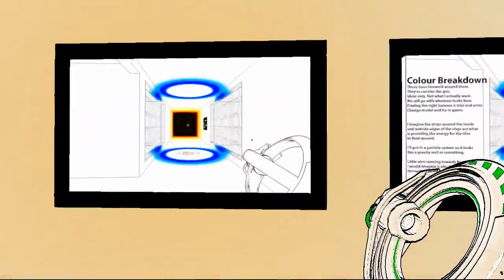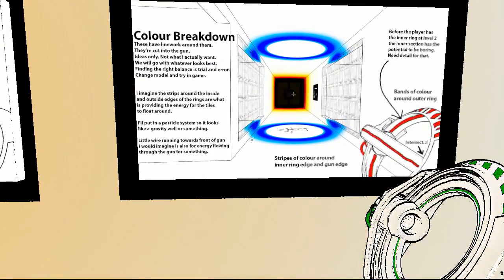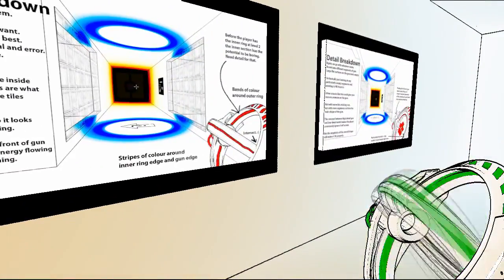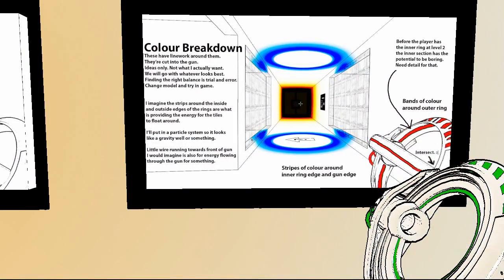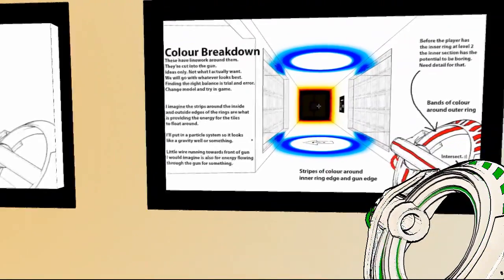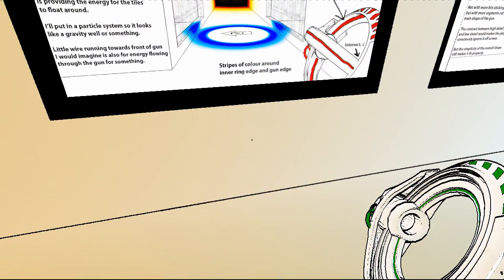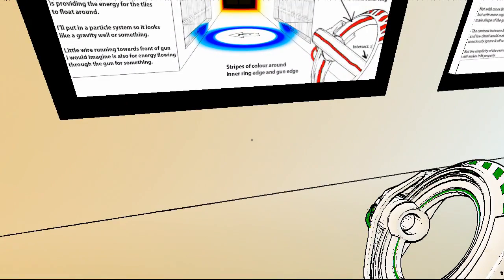But it's actually really cool how they... Oh, color breakdown! Let's see what it says. Ha! Intersect. Look at that, yeah. So, color breakdown. These have line work around them. They're cut into the gun. Ideas only. Not what I actually want. But we will go with whatever looks best. Finding the right balance is trial and error. Change model and try in game. I imagine the strips around the inside and outside edge of the ring are what is providing the energy for the tiles to float around. I'll put a particle system so it looks like a gravity wall or something. There's a little bit of sparks going on in the green there, if you look. A little wire running towards the front of the gun could... I would imagine it's also for energy flow through the gun or something.